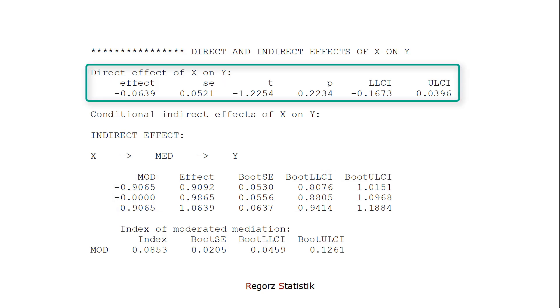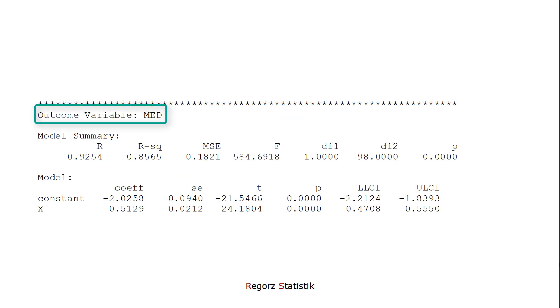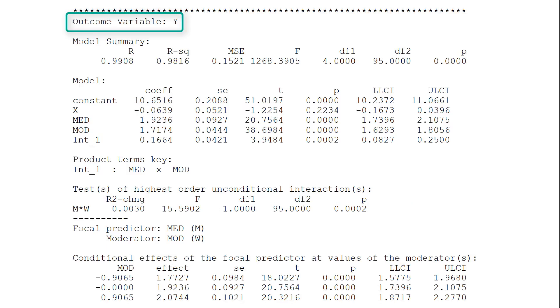As a follow-up, we can look at the direct effect. Here we have a p-value. Then we go to the start of the output, the model for the A path. Here we have a significant effect from the independent variable to the mediator.